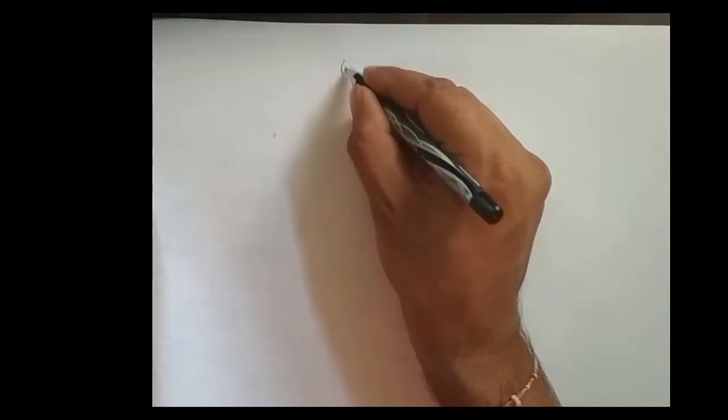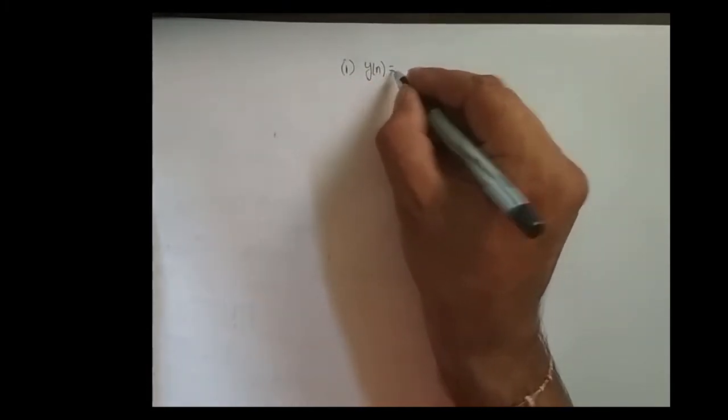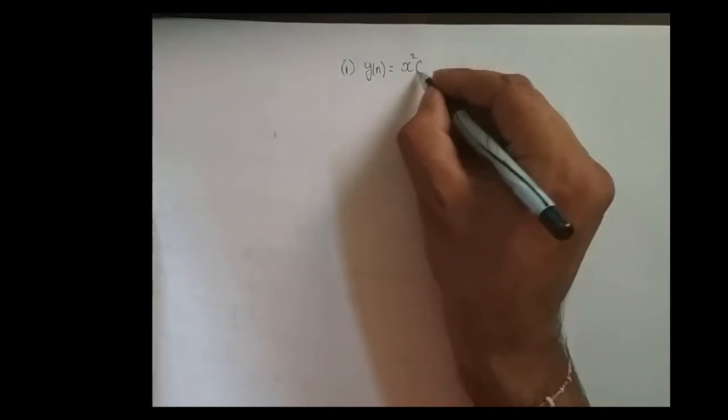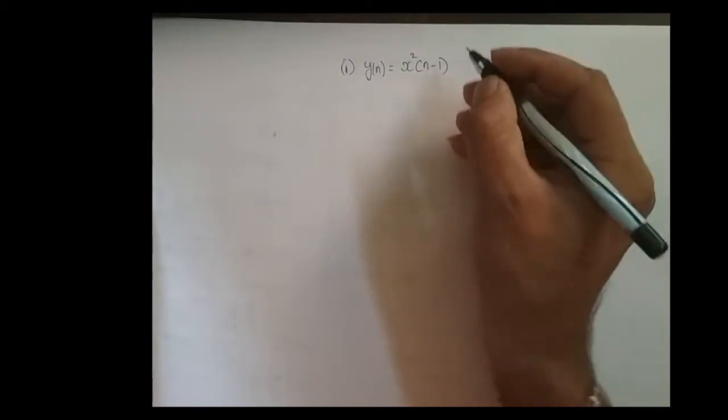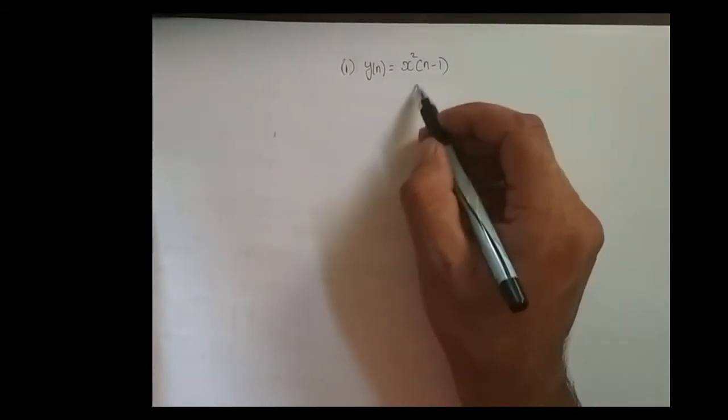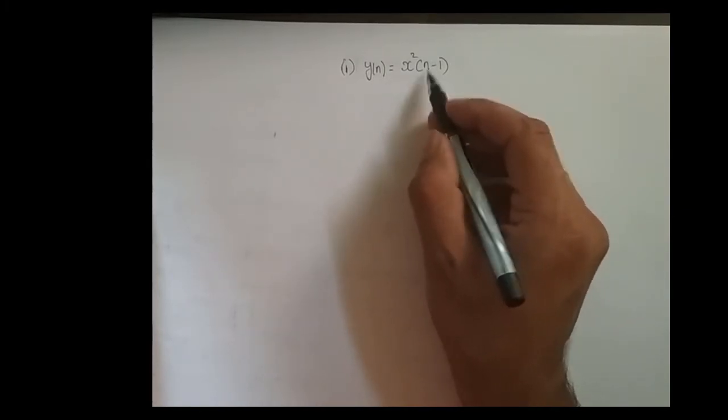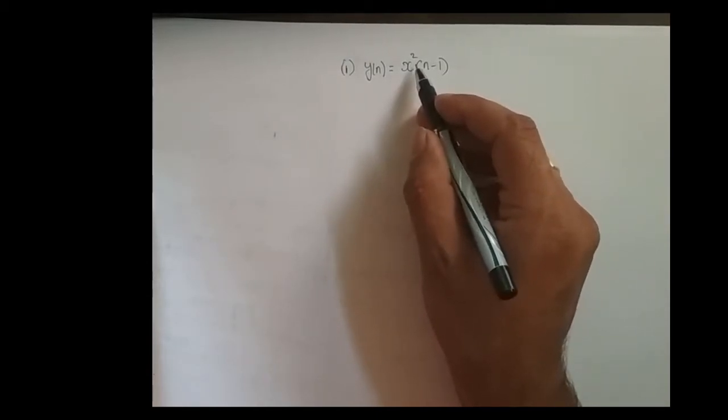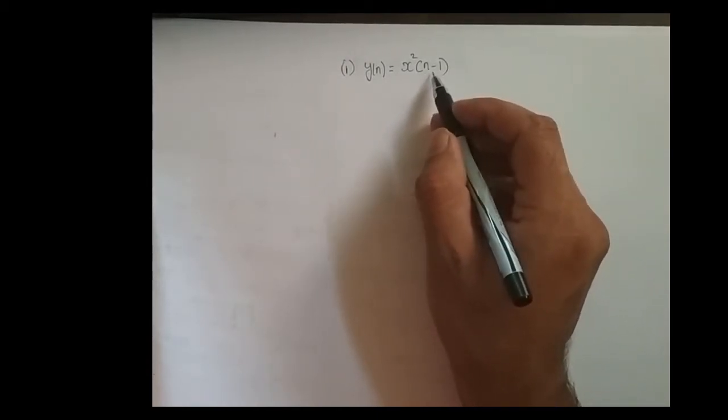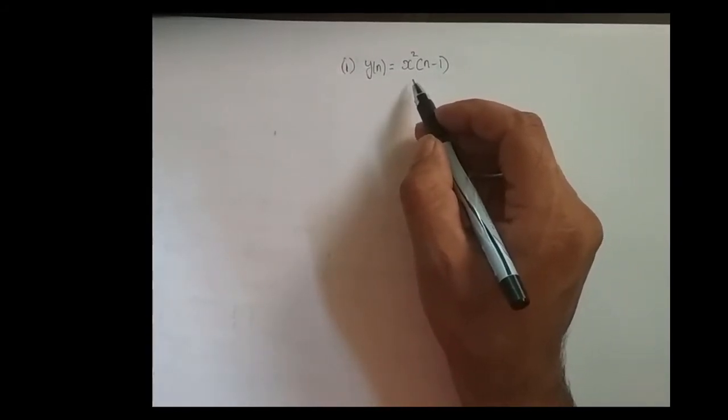The first system is y(n) = x²(n-1). I hope you can understand the system. What is happening here? If you feed x(n), what is the output I am getting as y(n)? It squares this given signal x(n) and shifts that signal right by one time, in this case by one sample. This is what the system is doing.